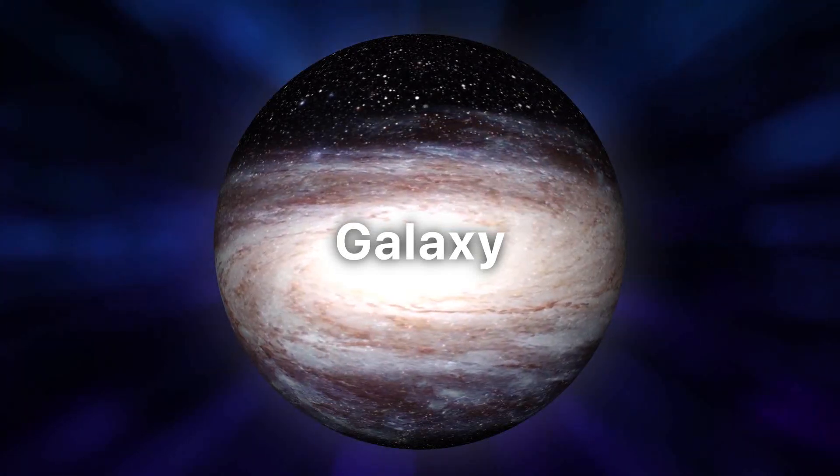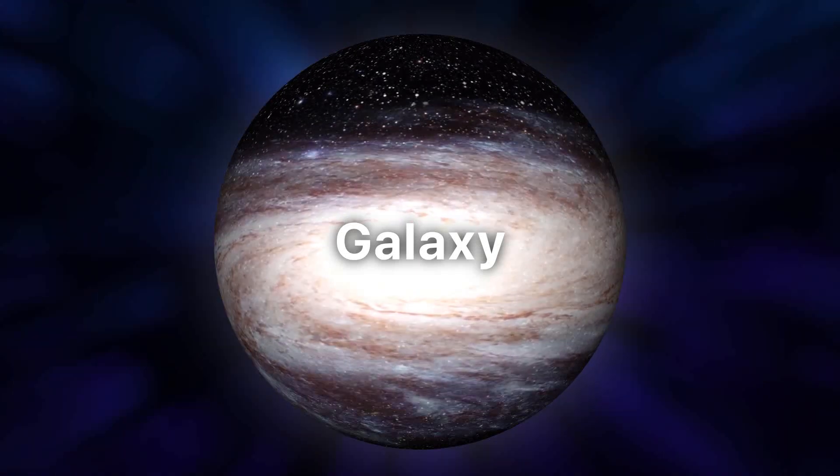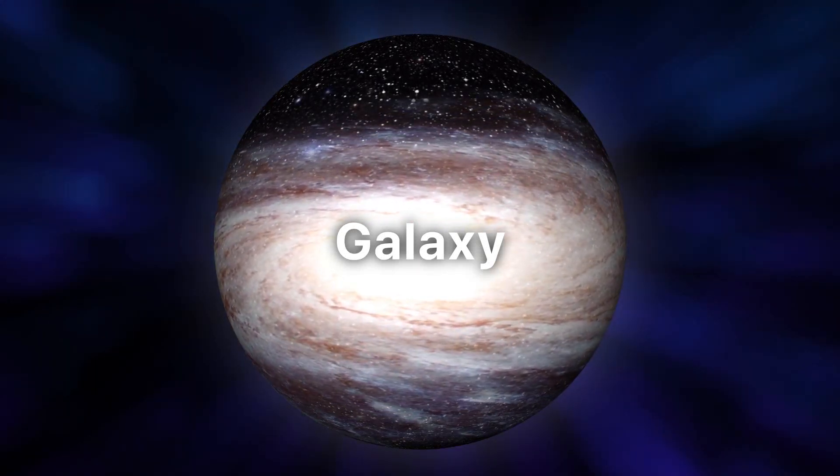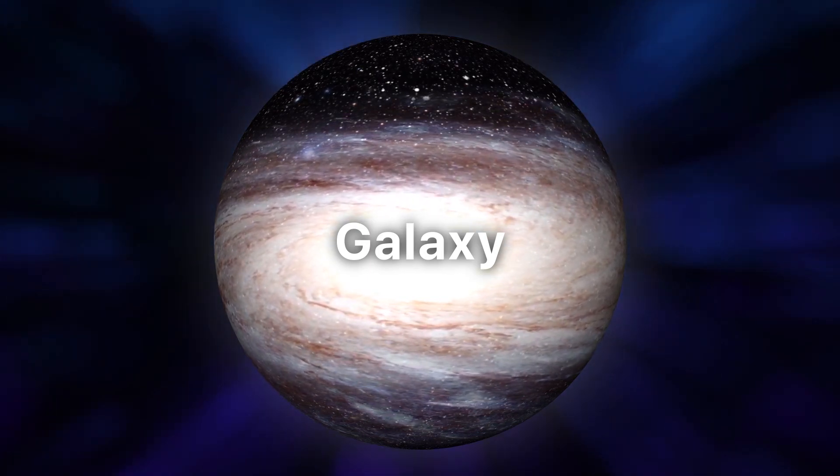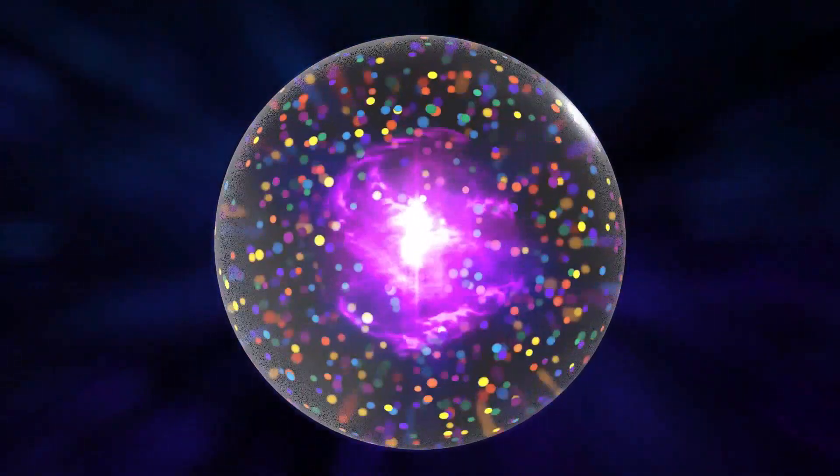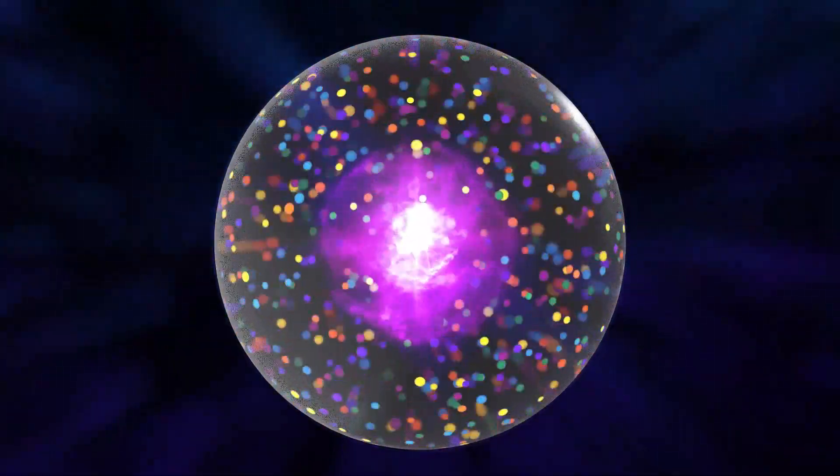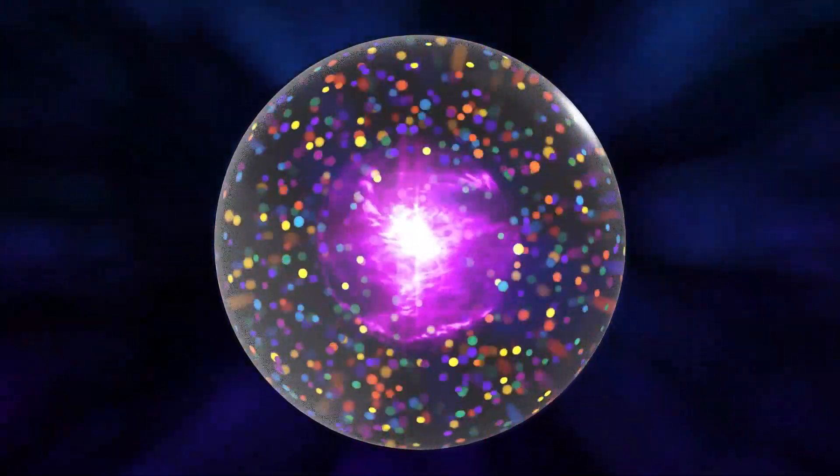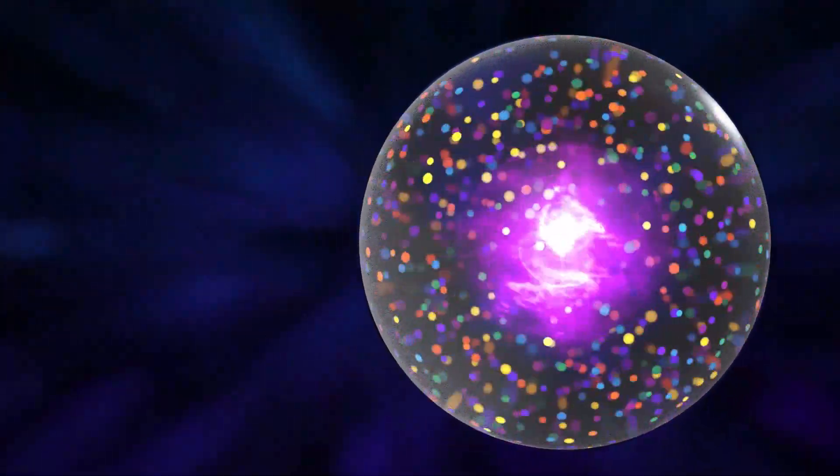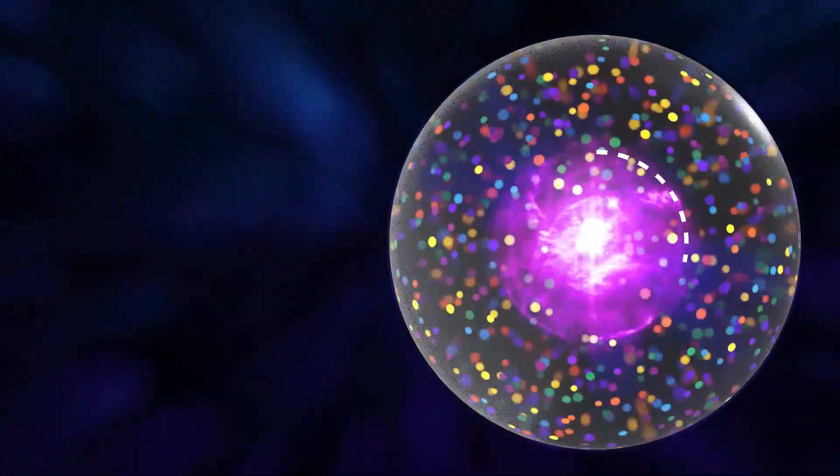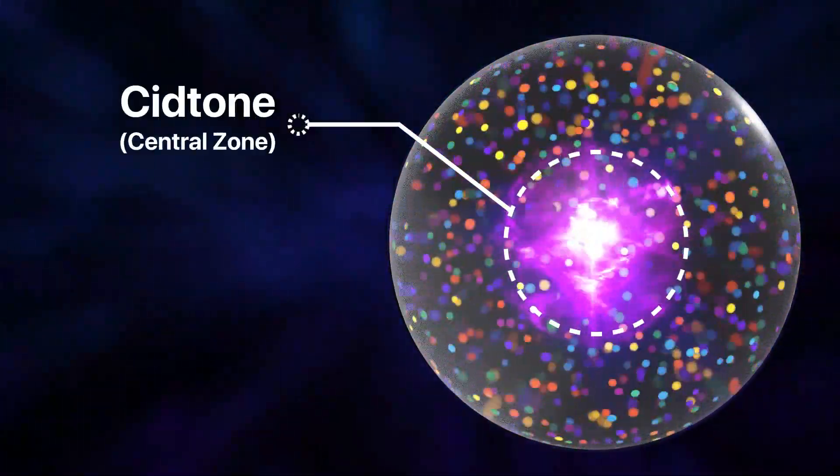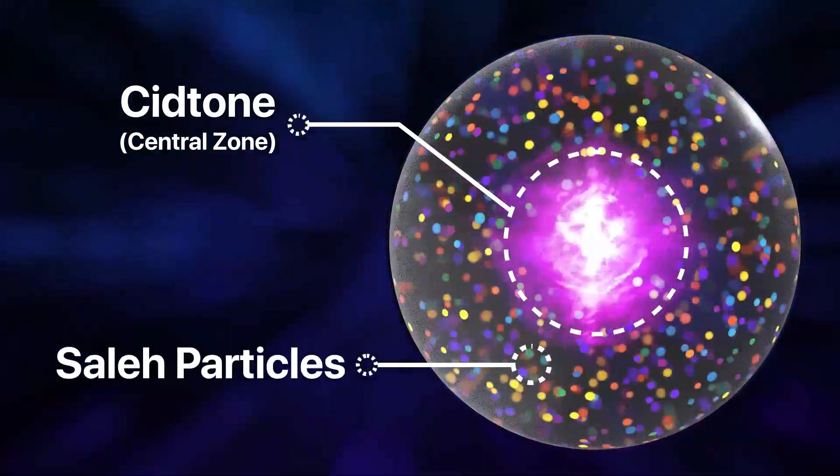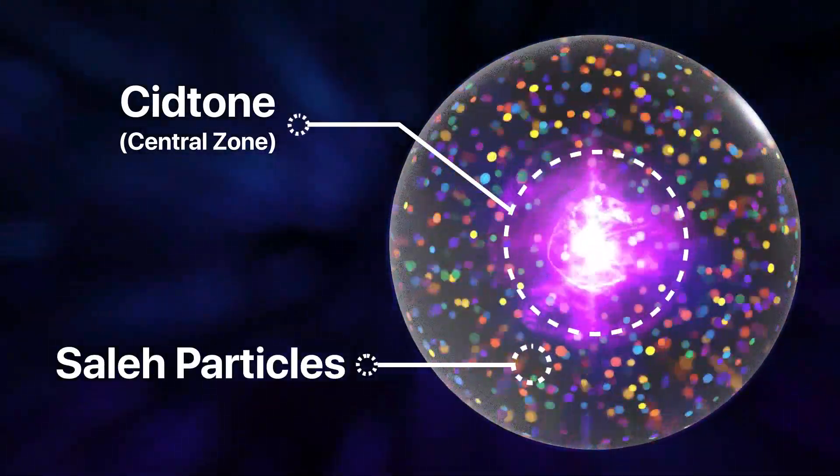According to the proposed figure for the photon, the internal structure of the photon can be considered in such a way that the cidtone is like a sun and the solid particles, colored particles, are like planets orbiting the sun.